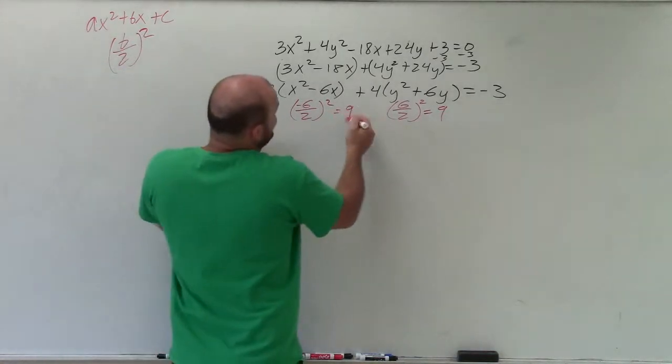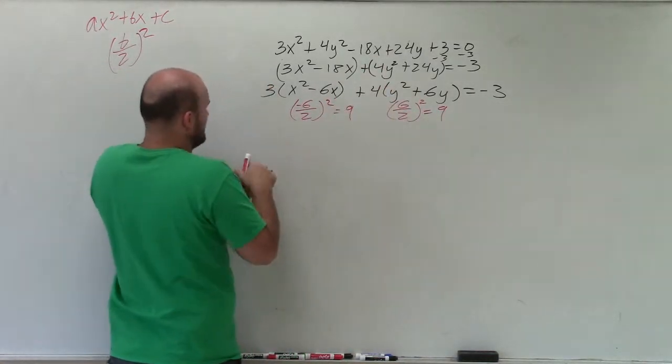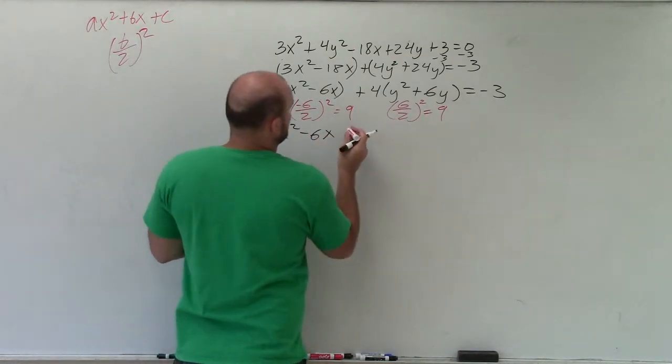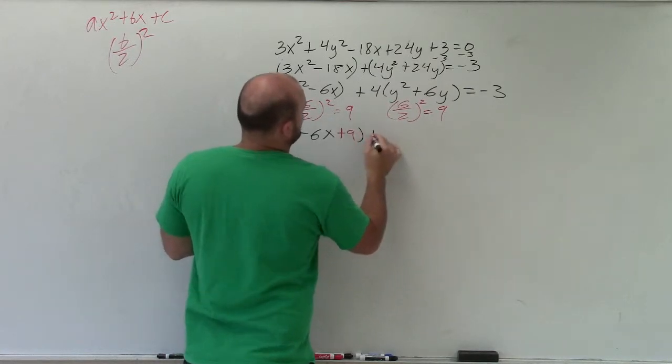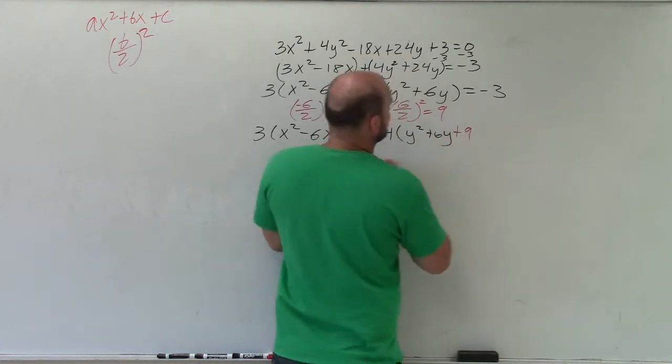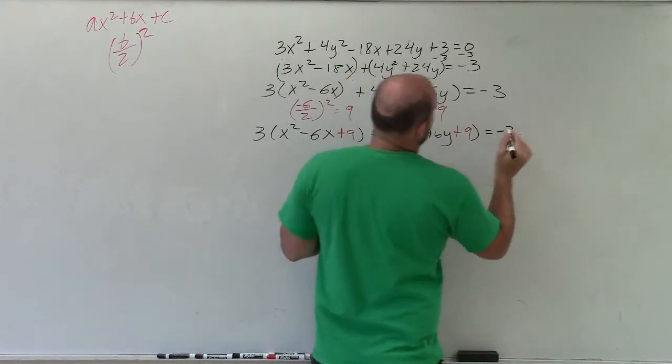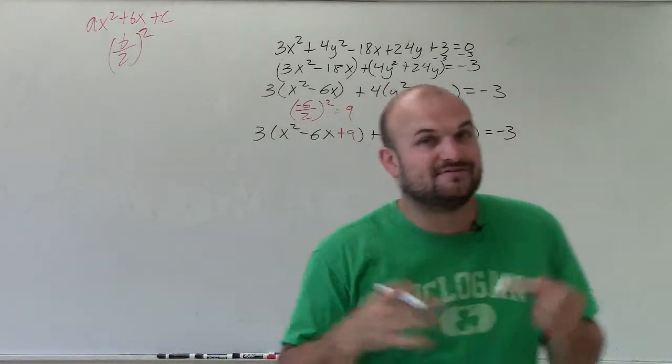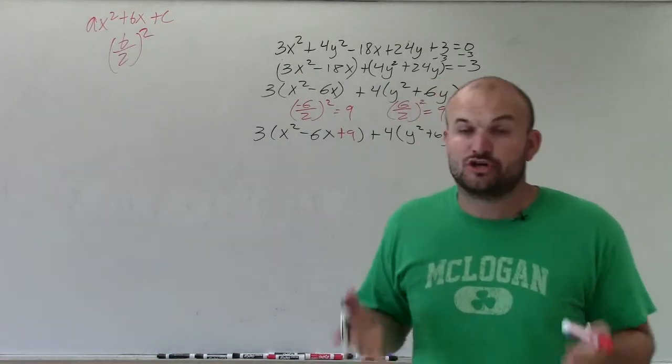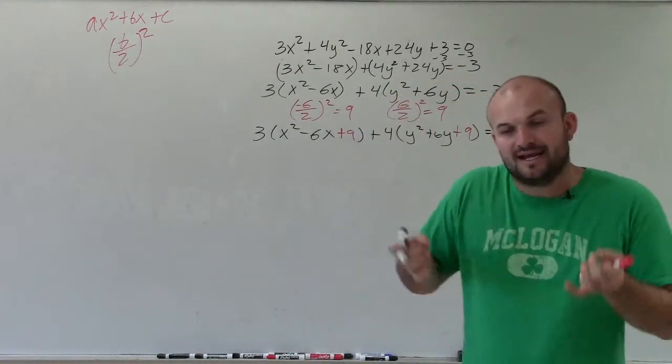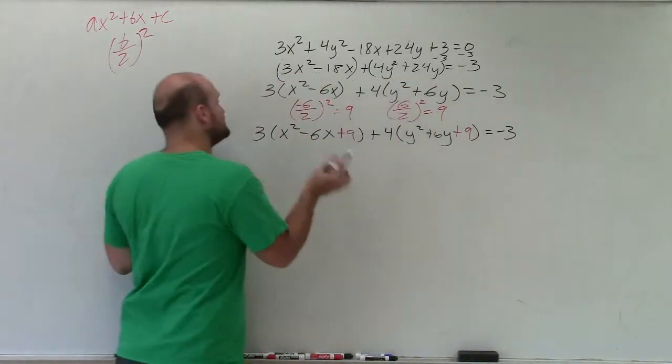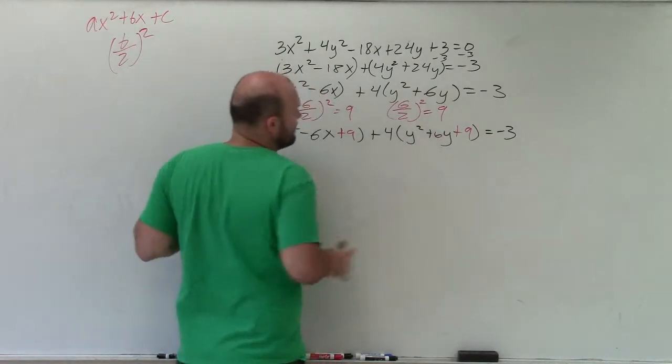So now, I'm going to add these two values inside of both of my parentheses. So now I have 3 times x squared minus 6x plus 9 plus 4 times y squared plus 6y plus 9 equals negative 3. So by adding 9, what I have done is I've created a perfect square trinomial. A trinomial that I can factor down into a binomial squared, meaning a factor multiplied by itself. And you can see they're exactly the same. The only difference is here my middle term is negative, here my middle term is positive.